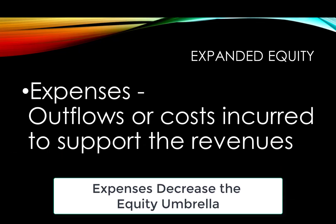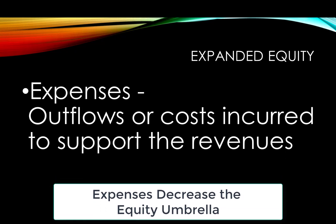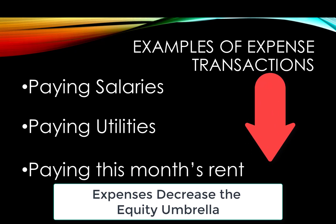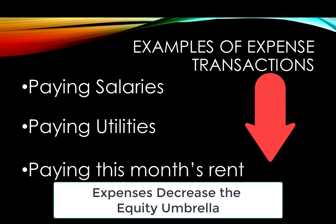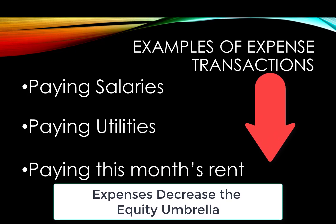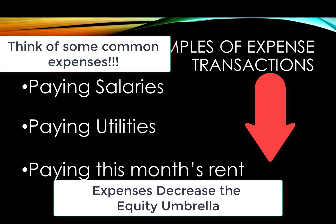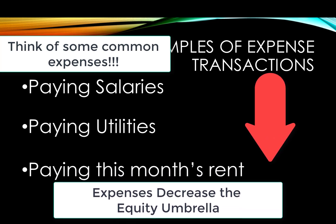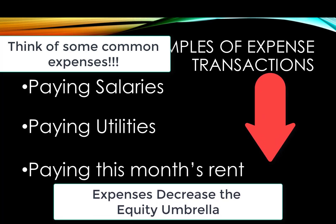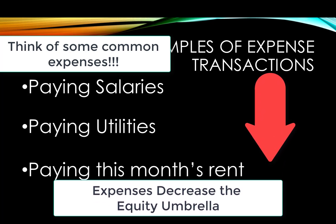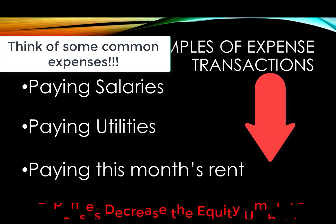Expenses, on the other hand, are the costs or outflows of cash or liabilities incurred to support the revenues. Unlike revenues that make the equity umbrella go up, expenses make the equity umbrella go down. Back to our earlier example, some of the expenses of that barber or salon owner would include the rent for the month, the cost of wages, the cost of supplies used up, utilities, and many other types of expenses. Once again, expenses make the equity umbrella go down.